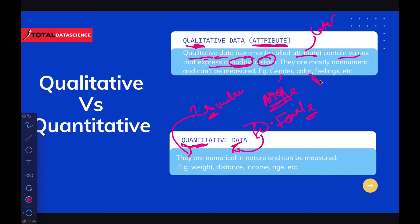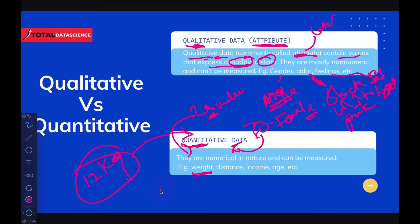When we quantify something, like saying the weight of an object is 12 kg, that becomes quantitative data. Distance — say 1,000 kilometers — is a quantity. Age — say 12 years old or 50 years old — these are quantities, making them quantitative data. Qualitative means characteristics or attributes; quantitative means we've measured or counted something.